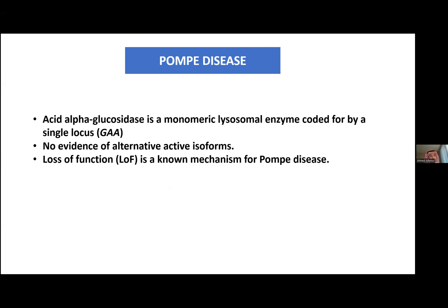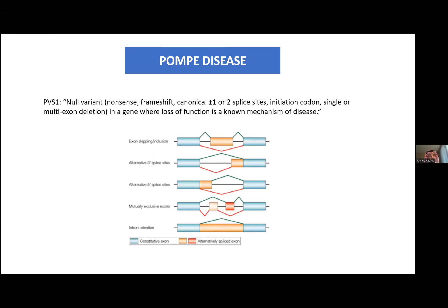These are fundamental features about Pompe disease compared to, for example, breast cancer, where there are many genes that can cause disease and different isoforms for BRCA1 and BRCA2. These are different layers of complexity not present in Pompe. Now, the PVS1 is a pathogenic very strong criterion — the ACMG considers these very strong variants that will really cause disease. These are null variants or loss-of-function variants resulting in exon skipping, for example canonical splice sites or variants impacting the initiation codon.